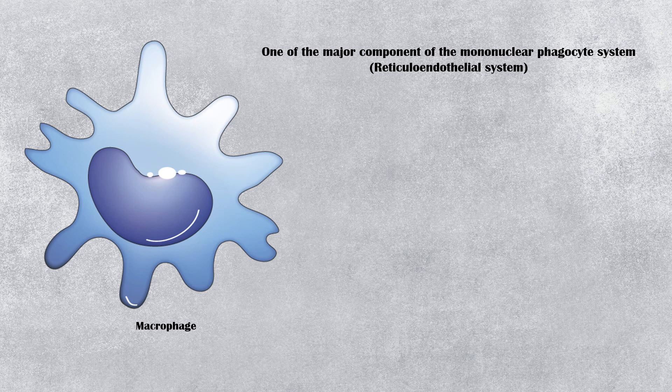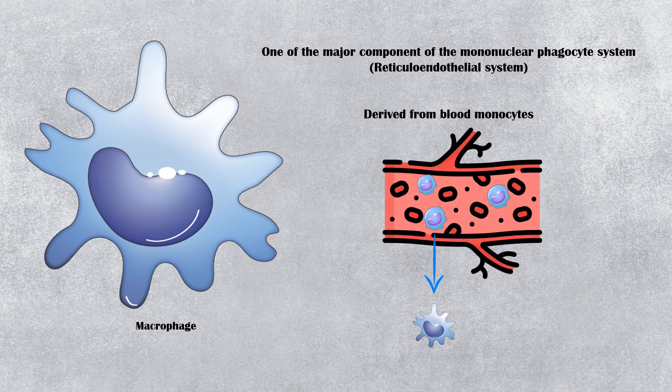This system is composed of closely related cell types, including blood monocytes and tissue macrophages. Tissue macrophages are derived from blood monocytes. When a monocyte migrates to a tissue from blood, it is transformed into a macrophage.